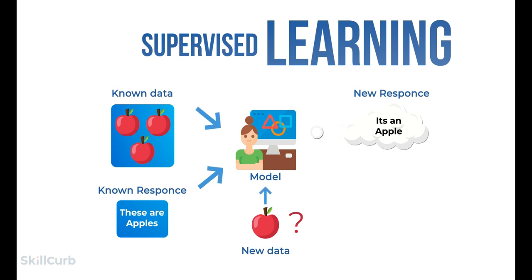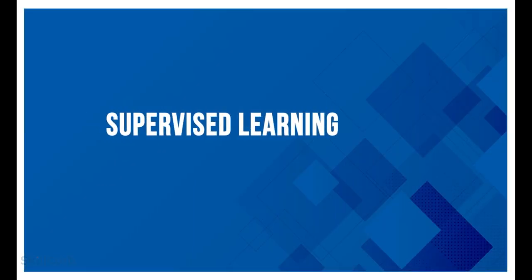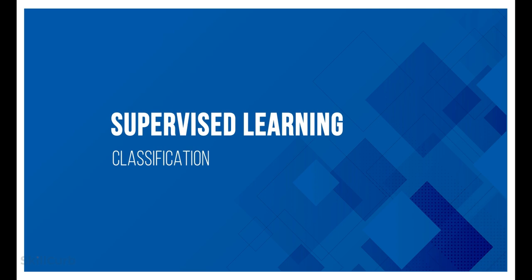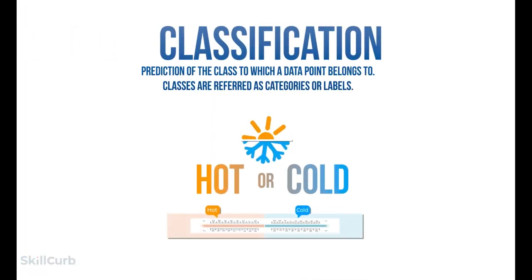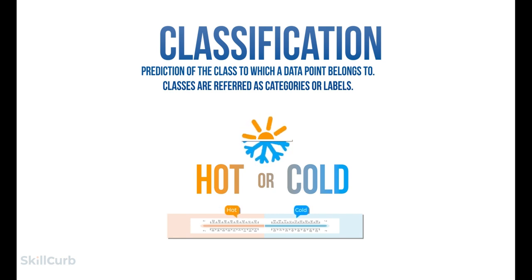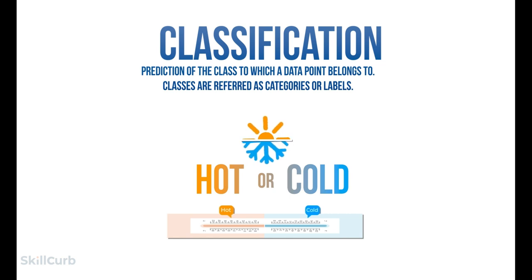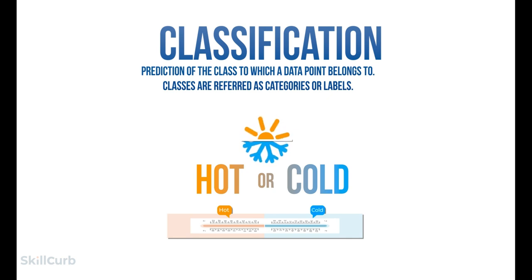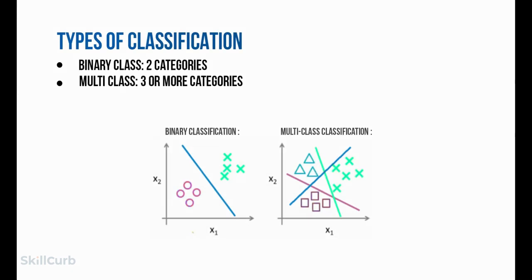There are two main types of supervised learning. The first is classification, where the result is a category — for instance, true or false, on or off. There can be two or more discrete categorical responses. There are two types of classification: binary class, where there are only two class labels (e.g., spam or not spam), and multi-class, where there can be more than two classes — for instance, weather might be sunny, rainy, cloudy, or windy.